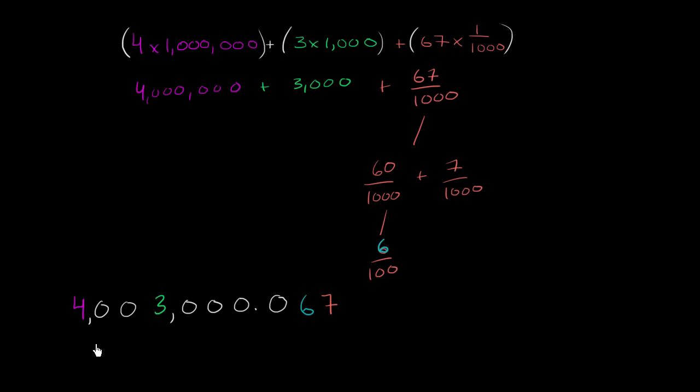So we could read this as 4 million, 3 thousand, 6 hundredths and 7 thousandths. Or we could read it as 4 million, 3 thousand, and 67 thousandths.